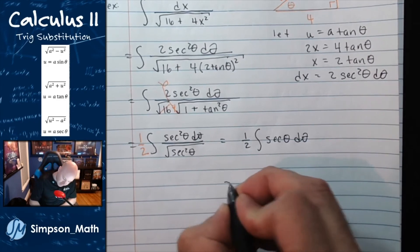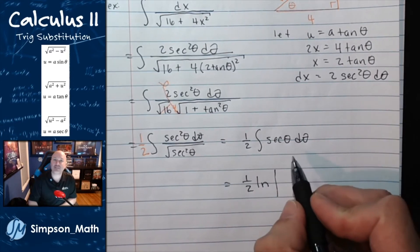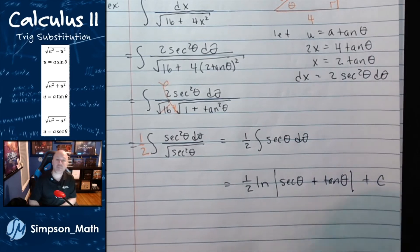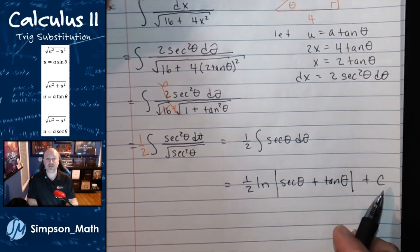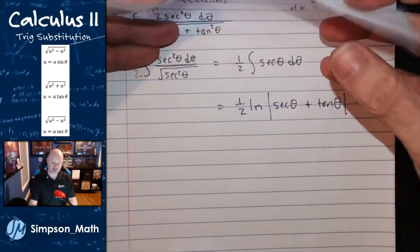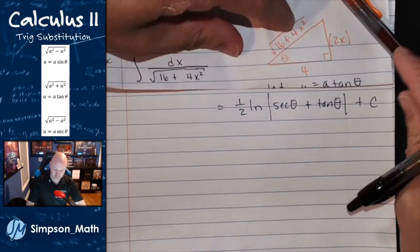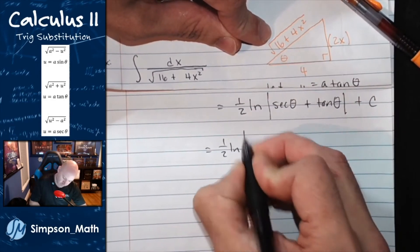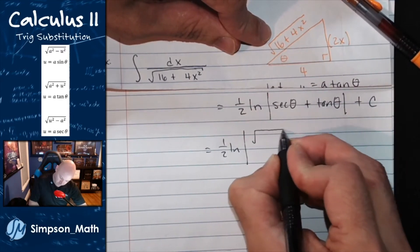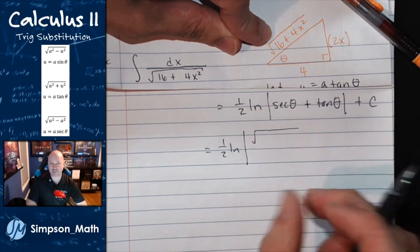I know this integral. This gives one half times the natural log of secant theta plus tangent theta, plus c. Going back to the triangle to convert: secant theta is the hypotenuse over the adjacent, and tangent is opposite over adjacent — they share the same denominator, so I'll add those two fractions to get the final answer in terms of x.